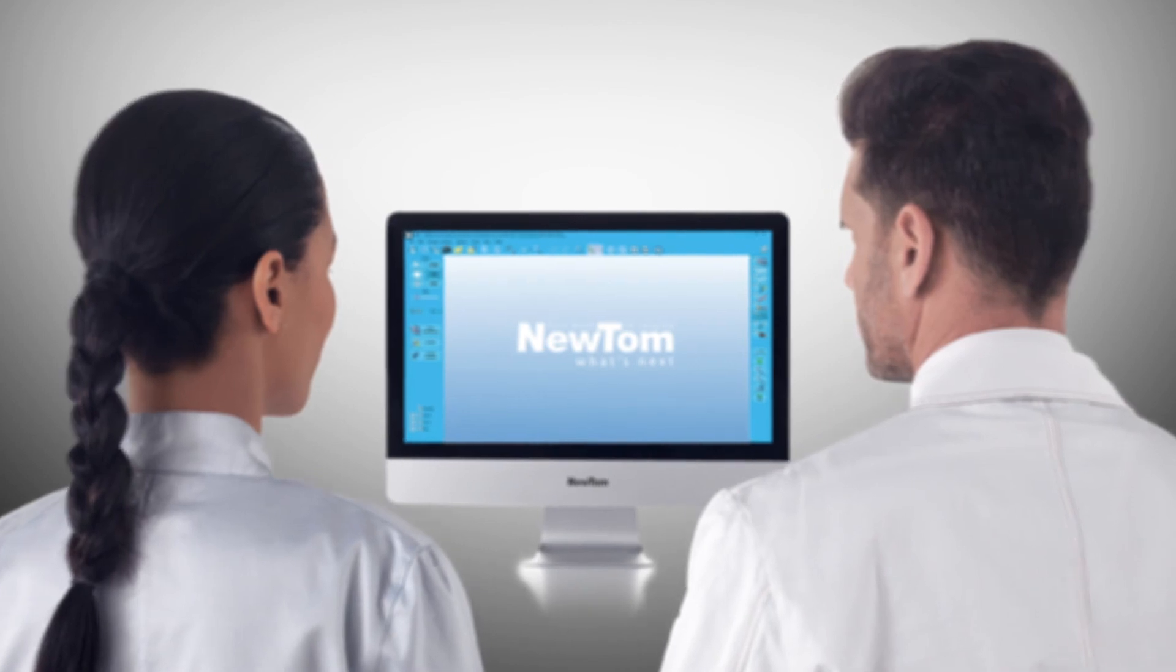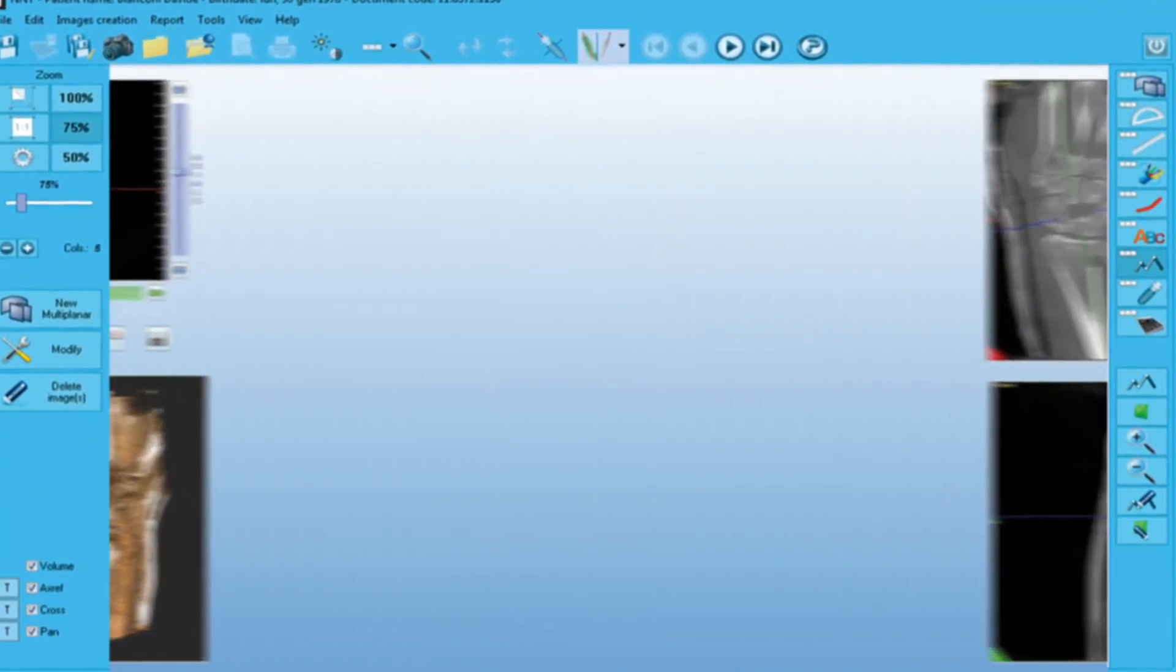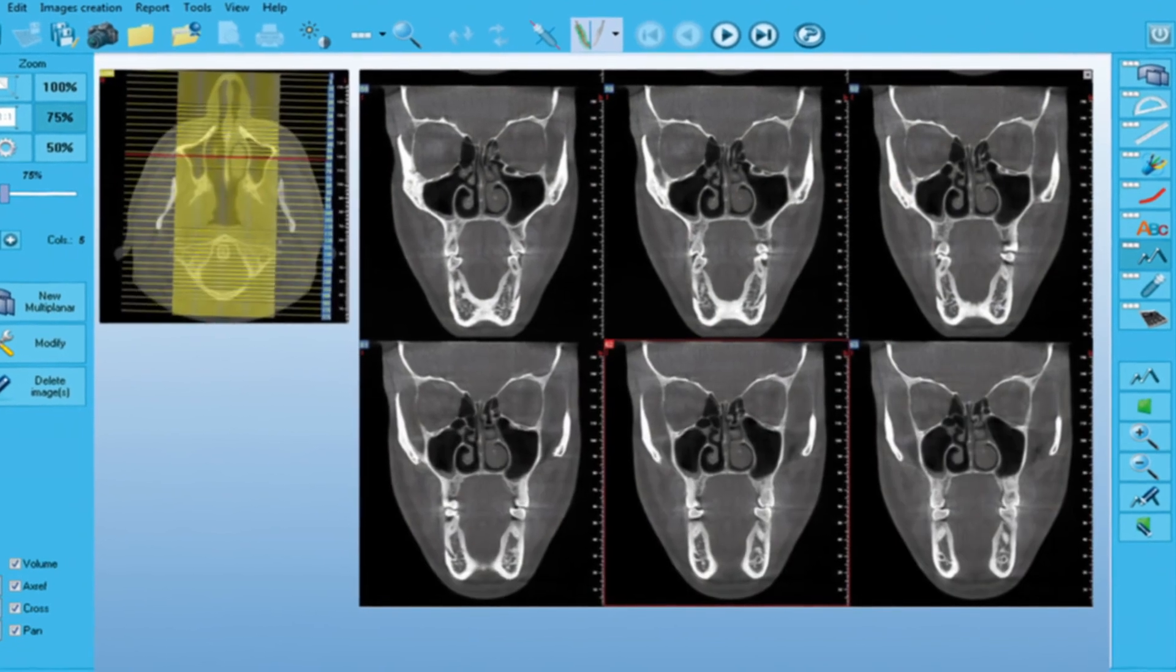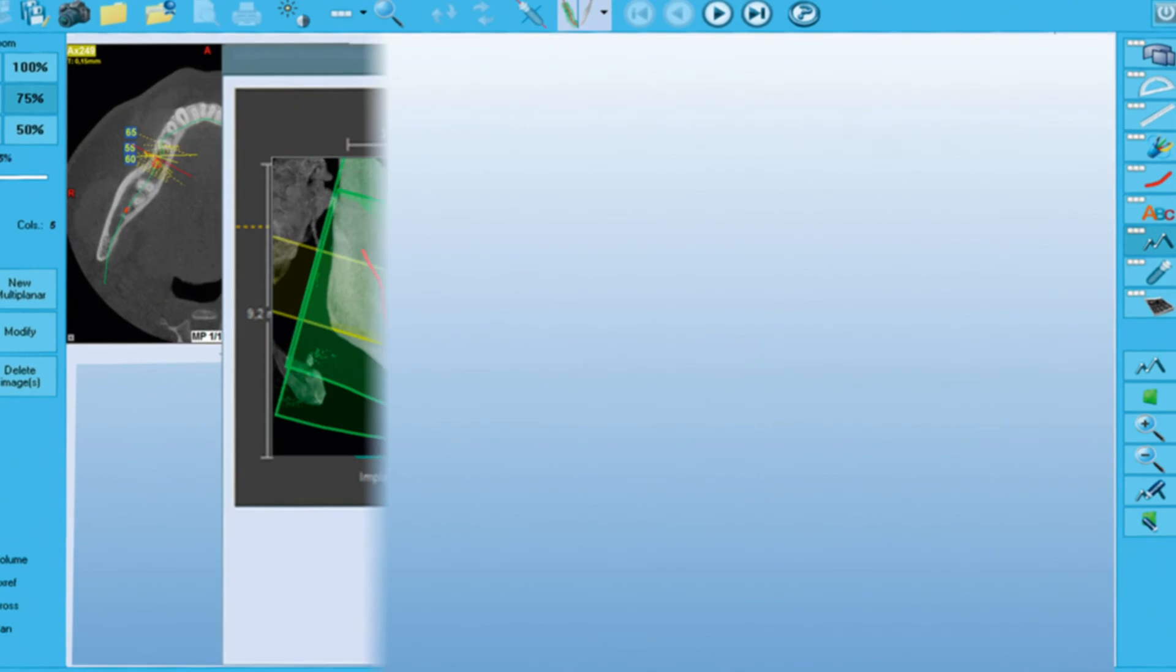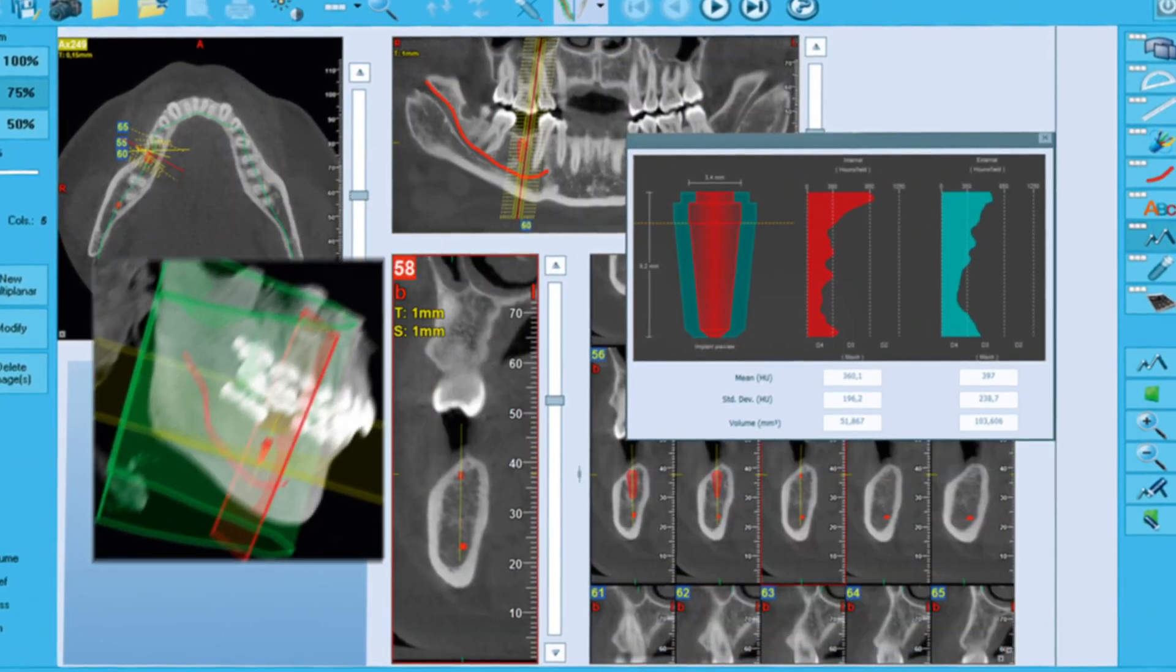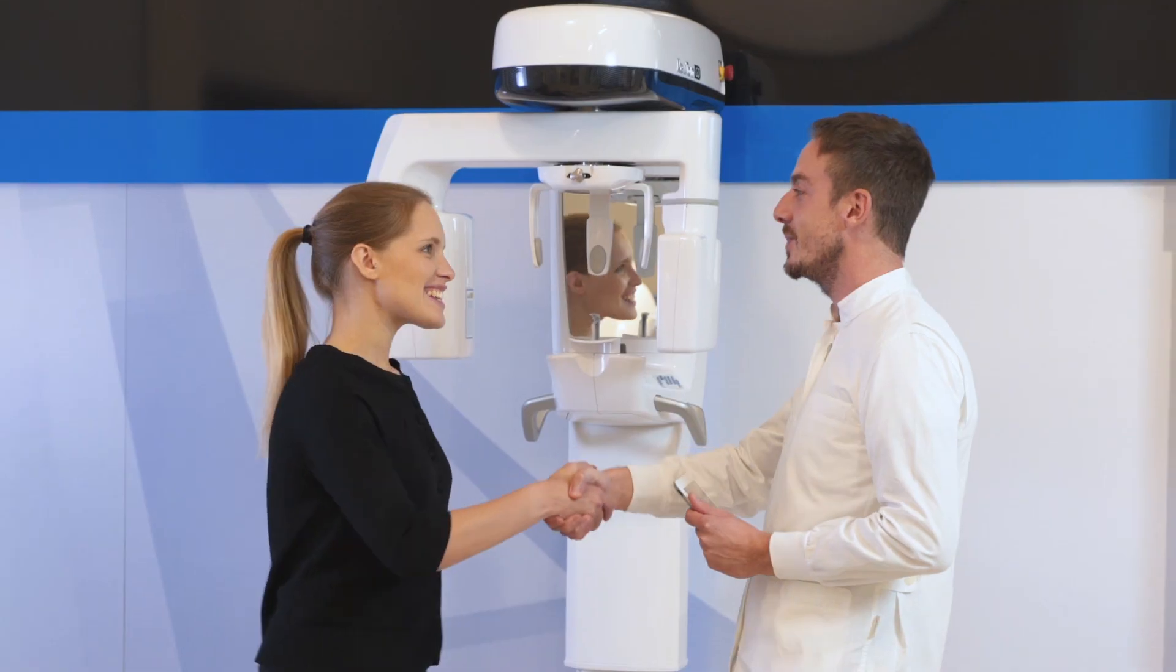Newtom is a pioneer of CBCT 3D technology applied to the dento-maxillofacial field. Thanks to its innovative technology and extremely high-performance software, Newtom Go is the best 2D 3D choice for even the most demanding professionals.